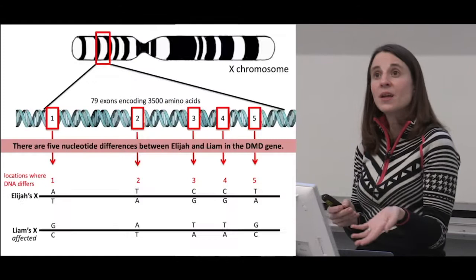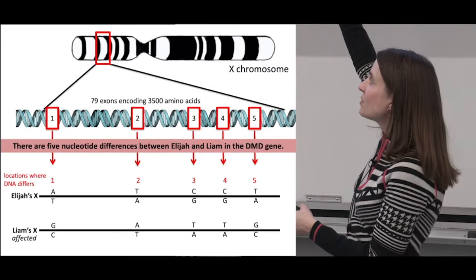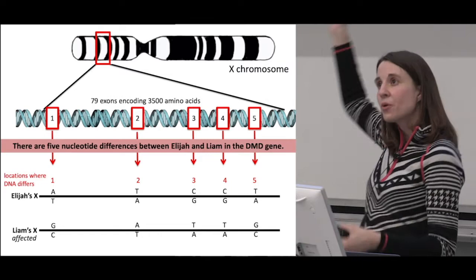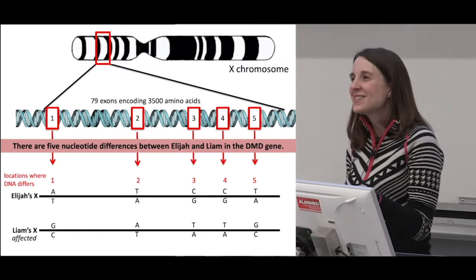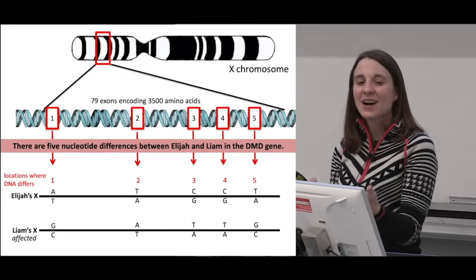They came up with the idea to do a case study comparing two brothers, Elijah and Liam. Liam has muscular dystrophy, and if you look at the X chromosomes of each individual, they had some nucleotide differences between them. The activity would ask students to explore these different nucleotide differences. Many of us may have been in projects like this where you get a group together and make progress, then go home and everyone gets busy and it's really hard to continue working.